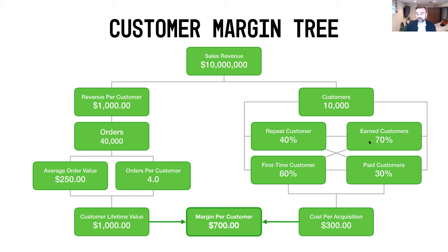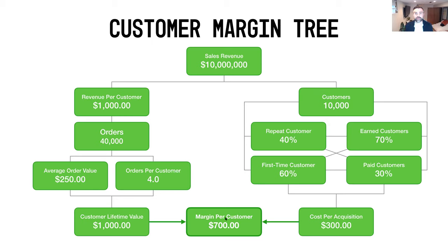You really want to push more toward earning customers and more toward repeat customers to drive more revenue. Long story short: if the total cost to acquire all these customers gives a cost per acquisition of around $300, and your customer lifetime value is $1,000, then $1,000 minus $300 equals a margin per customer of $700. That, in a nutshell, is how the customer margin tree works.